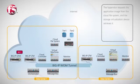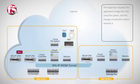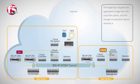Next, the hypervisor requests the application image from the cloud file system. The storage virtualization device retrieves the application image via NFS from the appropriate storage tier. This, too, happens through the secure and optimized tunnel.